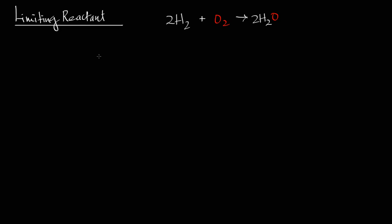In this tutorial we are going to look at how to determine the limiting reactant given the amounts of the reactants in the given reaction. In the given reaction we have two molecules of hydrogen reacting with one molecule of oxygen to produce two molecules of water. The amounts given respectively are 2.00 grams of hydrogen and 4.80 grams of oxygen. We need to know how much water is produced based on the reactants as given.